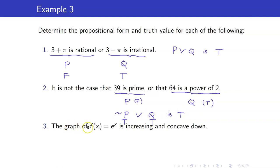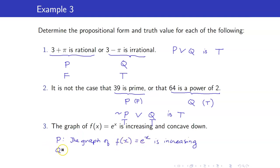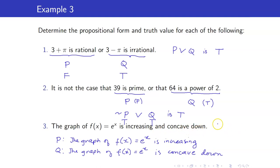Next: 'The graph of f of x equals e to the x is increasing and concave down.' P is the statement 'the graph of f of x is increasing' and Q is 'the graph of f of x is concave down.' The propositional form is P and Q. The graph of f of x is increasing — that is true. But it is not concave down; it's concave up. Q is false. So therefore P and Q is false.